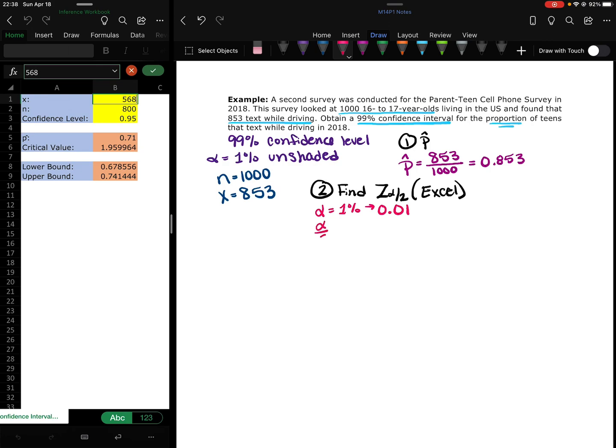So then alpha over 2 would be 0.01 divided by 2, which is 0.005.